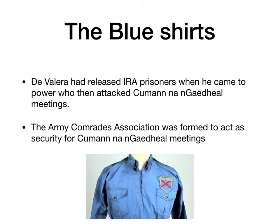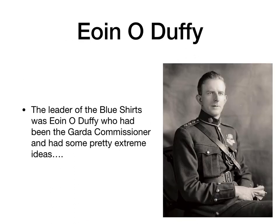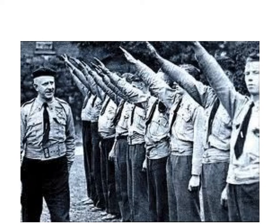The next big challenge for de Valera and Fianna Fáil's government was the Blue Shirts. When de Valera came to power he released IRA prisoners, and when these prisoners got out they attacked Cumann na nGaedheal meetings. In response, ex-soldiers set up the Army Comrades Association and acted as security for Cumann na nGaedheal meetings. The leader of the Blue Shirts was a man called Eoin O'Duffy. He had been the Garda Commissioner and was fired by de Valera when he came in because of his extreme ideas.